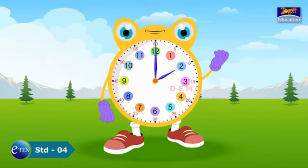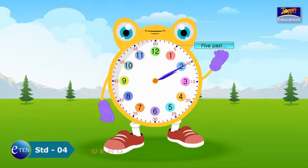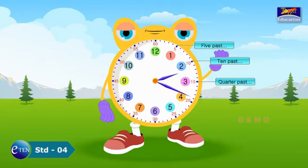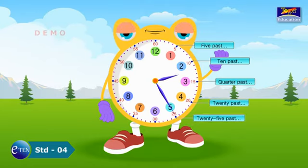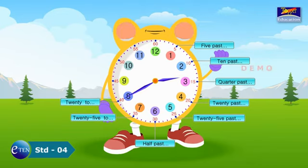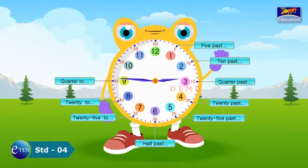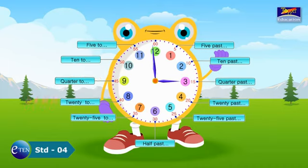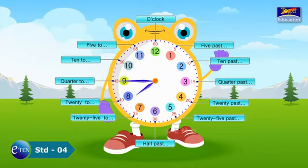When the minute hand goes to 60 minutes, the hour hand moves to the next number. On the numbers, we call them 5 past, 10 past, 15 past, or quarter past, 20 past, 25 past, half past, 25 to, 20 to, quarter to, 10 minutes to, 5 to, and the next o'clock. And again the cycle repeats from 5 past to 5 to.